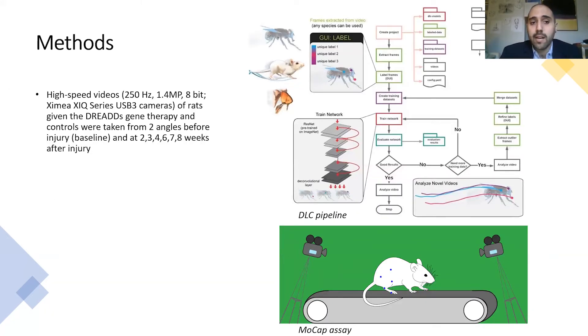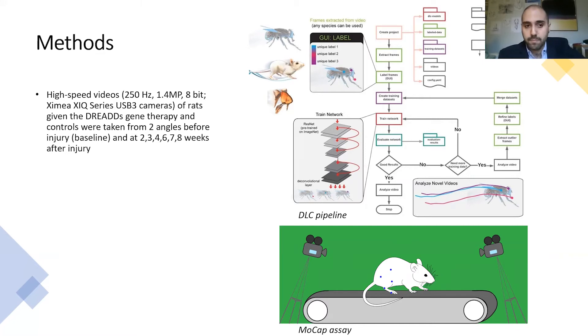To do so, we took high-speed videos of two groups of rats. One was given the JETS gene therapy, and the others were controls. We took videos from two different camera angles to allow us to reconstruct in 3D.